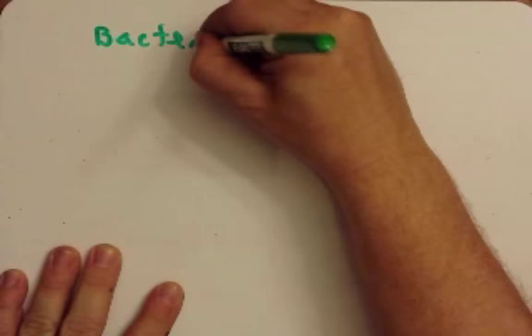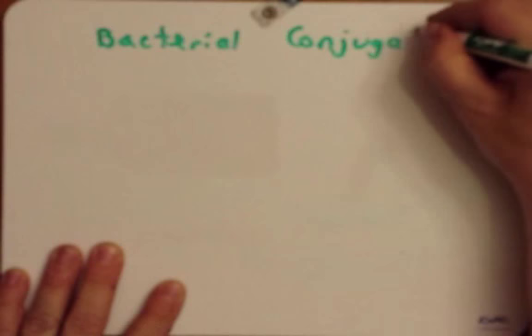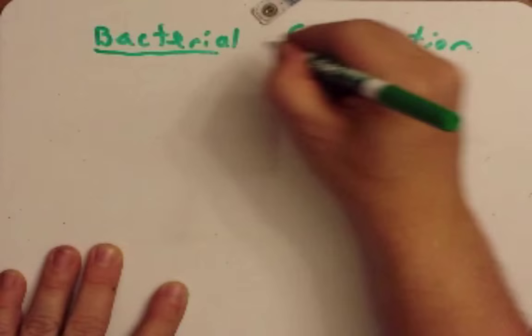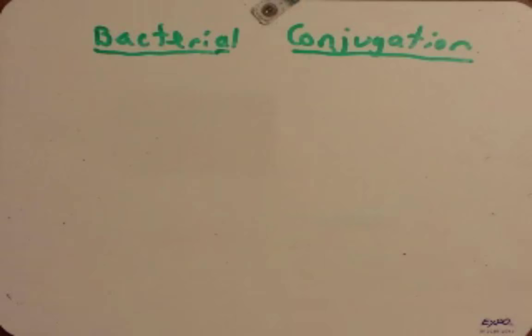Hello and welcome everyone. In this podcast we're going to talk about bacterial conjugation. Remember this is one of the three types of horizontal gene transfer: conjugation, transduction, and transformation.